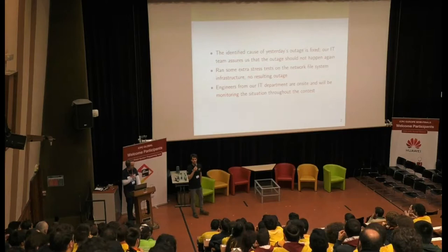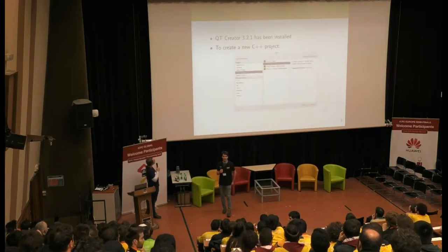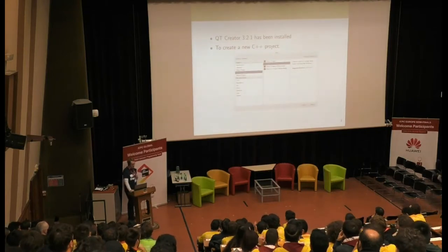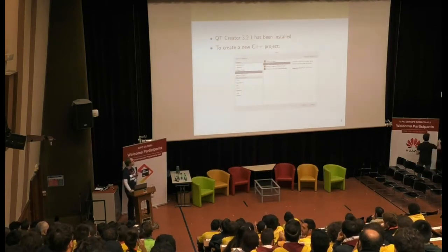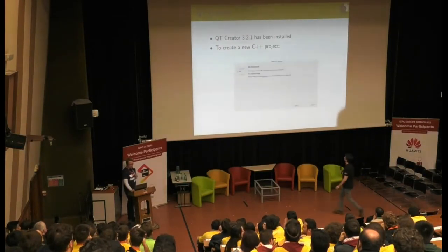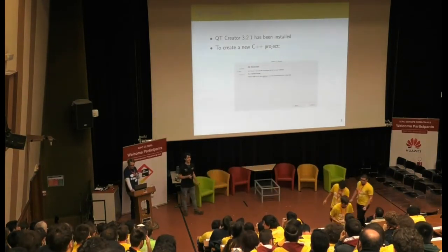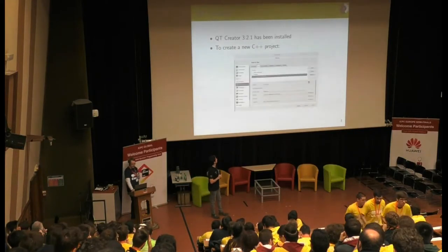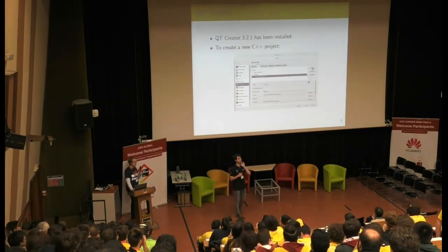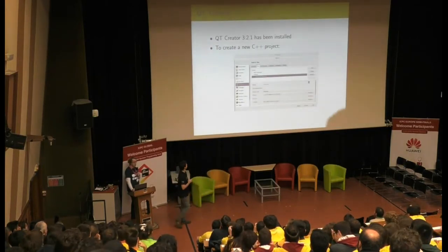We have installed Qt Creator version 3.2.1. Since it's a fresh install, to create a new C++ project you need to do the following: select new project, plain C++ project. You'll get a message complaining about no kits — choose the options button, then add the default kits and it works. We tested it. These instructions are also available on the portal.